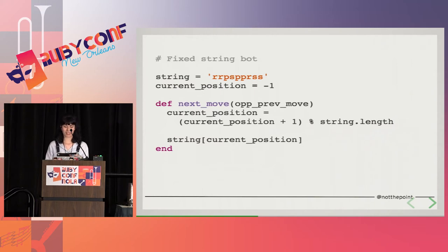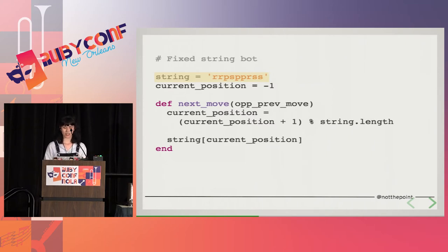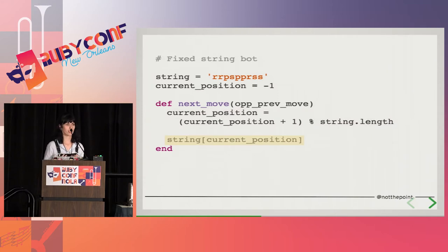This bot doesn't choose rock, paper, and scissors with different statistical frequencies. This is our fixed string bot, and it cycles through a set string of moves. This string is the statistically balanced string, which is a fancy way of saying the same number of R's, P's, and S's. We have our current position starting at minus one, and we increase our current position wrapping at the end of the string, getting our move by taking the value of our current position in the string.